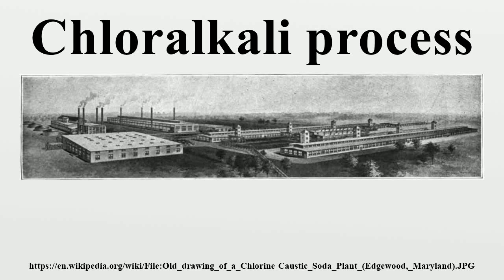The chloralkali process is an industrial process for the electrolysis of NaCl. It is the technology used to produce chlorine and sodium hydroxide, which are commodity chemicals required by industry. 35 million tons of chlorine were prepared by this process in 1987.